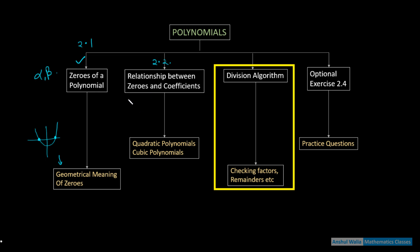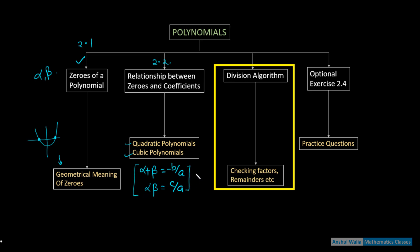हमने quadratic और cubic दोनों की relationship करी थी। Quadratic में हमने देखा था कि alpha plus beta = minus b by a और alpha beta = c by a है। Cubic की भी relationship करी थी।